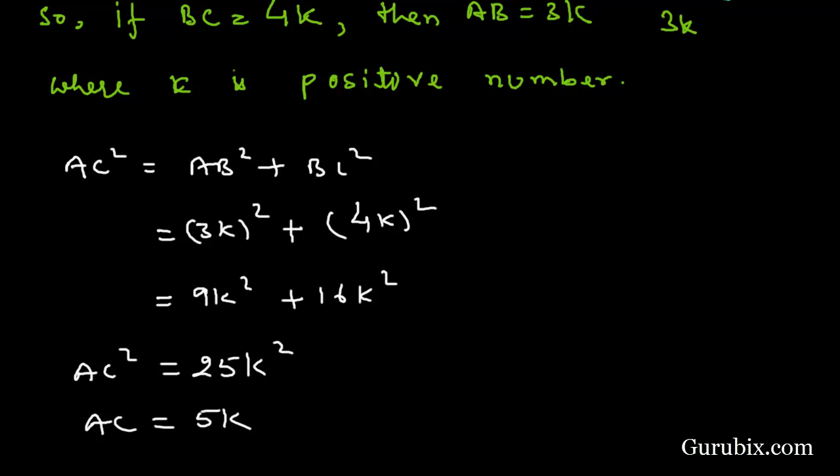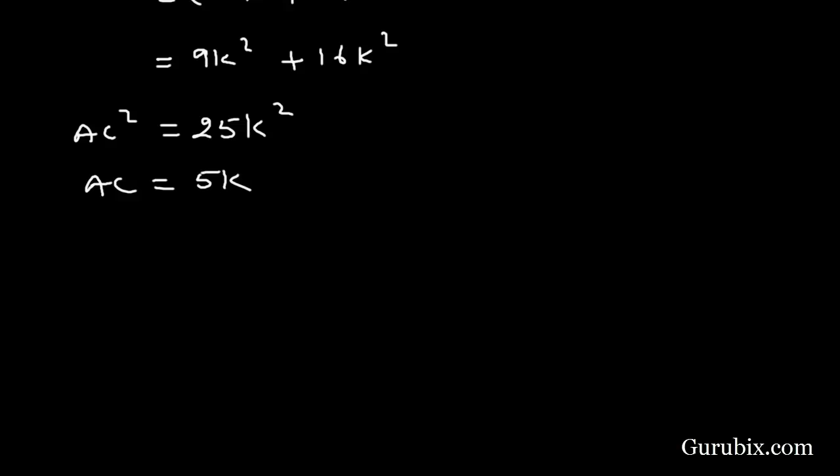Now we can easily find out other trigonometric ratios by using AB, BC, and AC. So now we shall find sin A. We know that sin theta equals perpendicular upon hypotenuse. Perpendicular is 4K and hypotenuse is 5K. Therefore it will be 4/5.